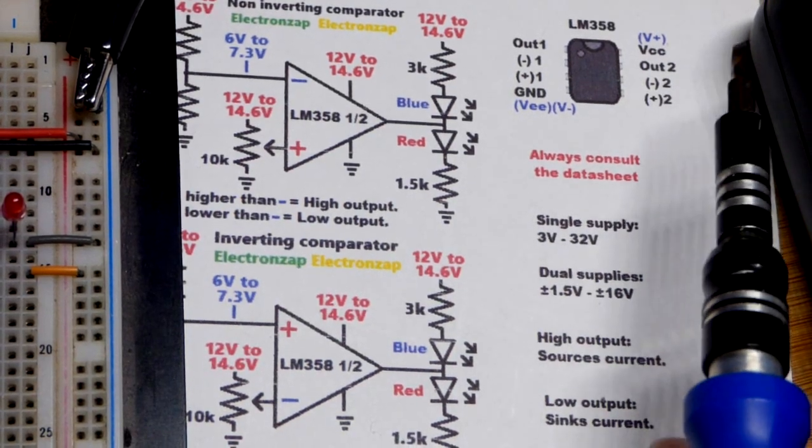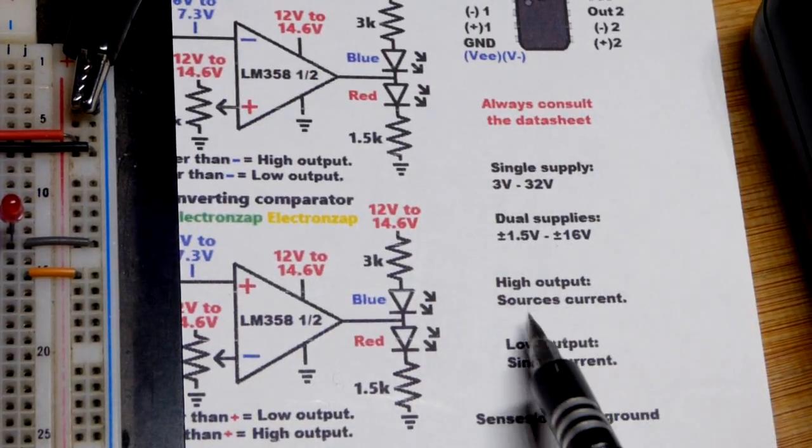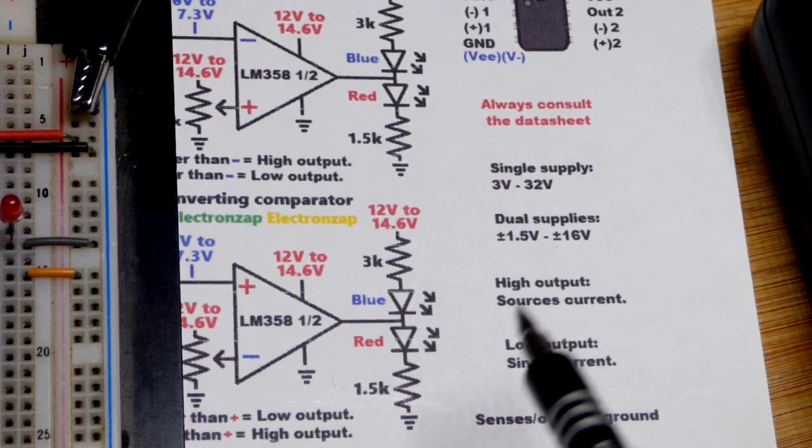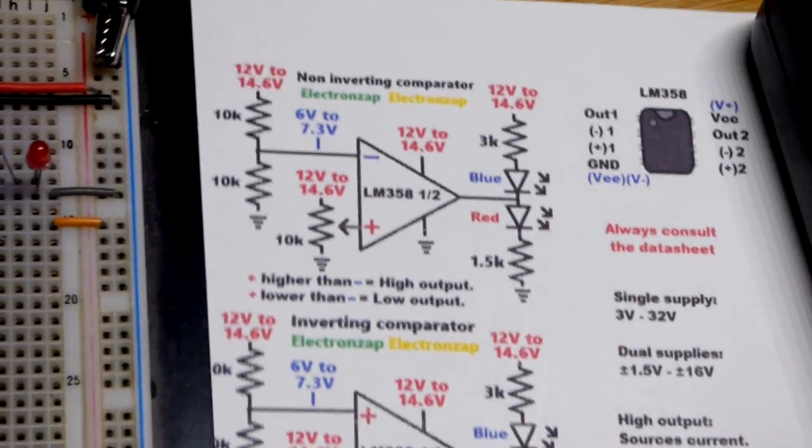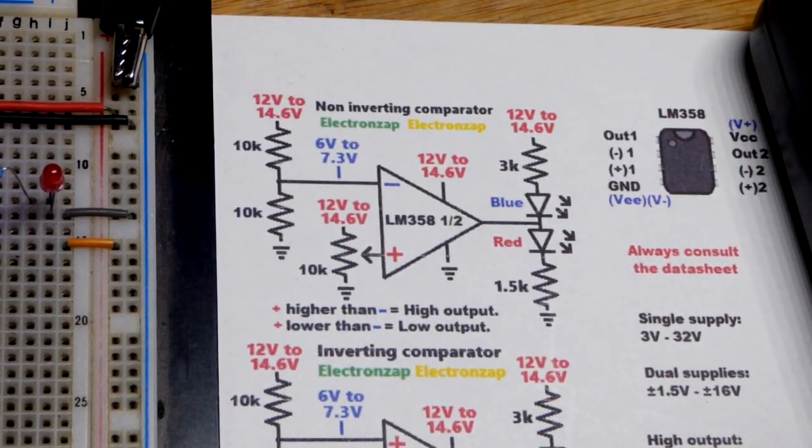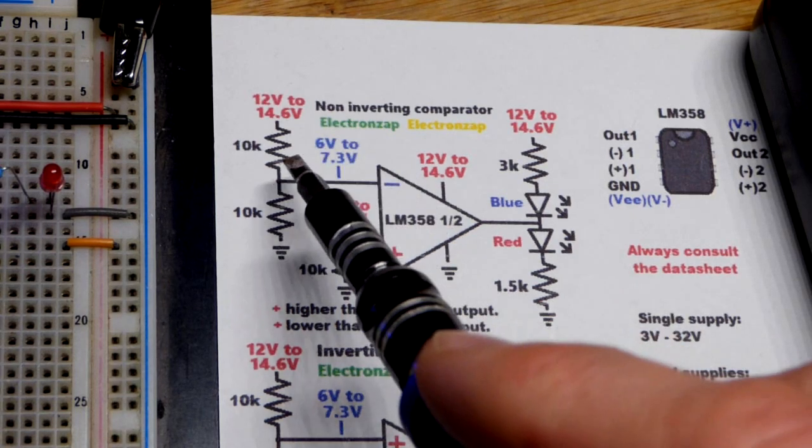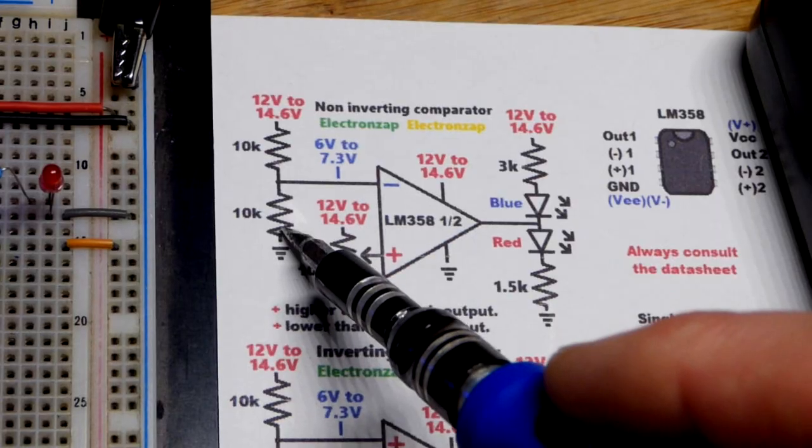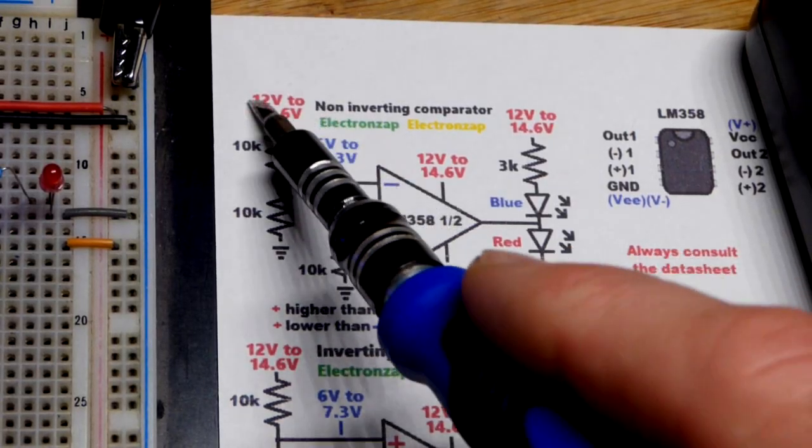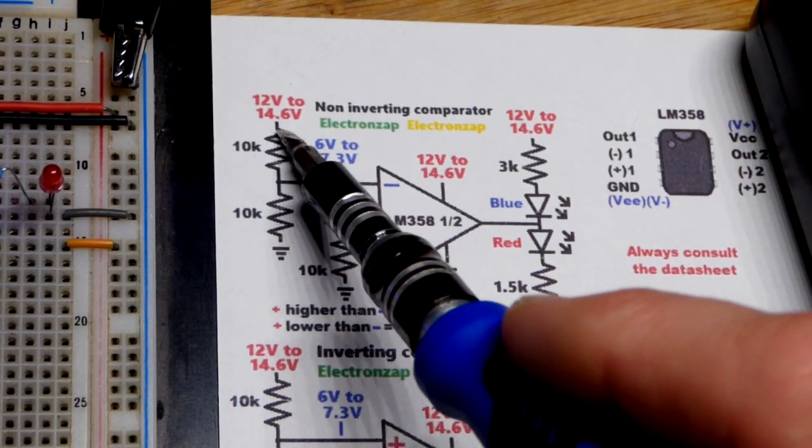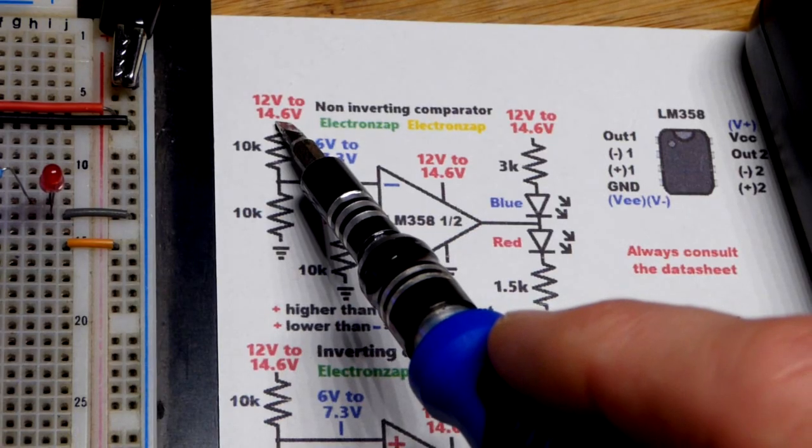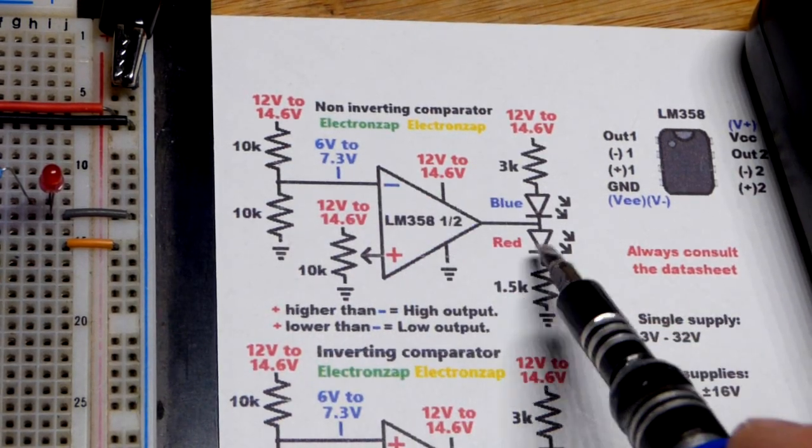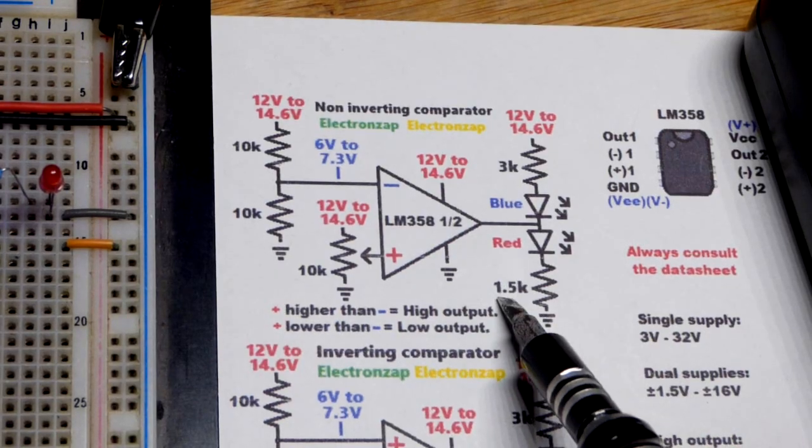When the output is high the output is considered sourcing the current, and when it is low it's considered sinking the current. We're working with 12 volts, 10 kilo ohm resistors are perfectly fine at 12 or 15 volts. Even a thousand ohm resistor should do okay at 12 volts.